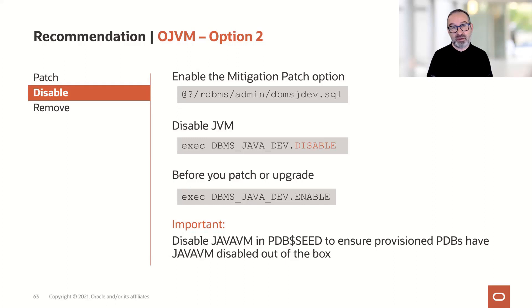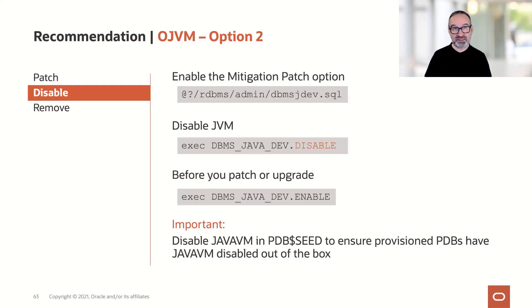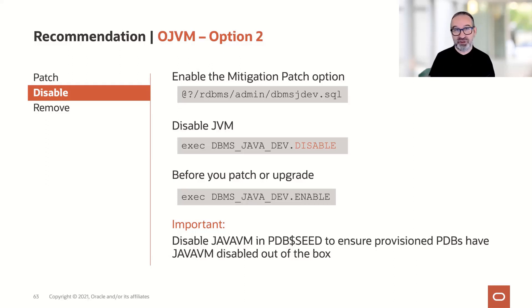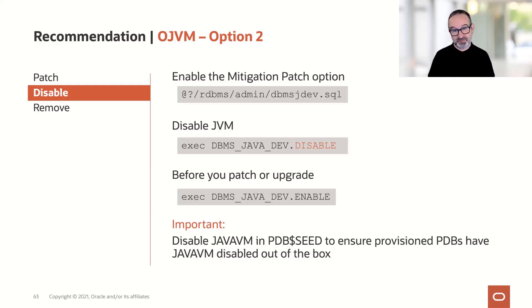It's very important to also disable the Java subsystem in PDB dollar seed, to ensure that when you provision fresh PDBs they also have the Java subsystem disabled out of the box. Otherwise, you could have five PDBs with the mitigation patch active and Java subsystem disabled, but a newly provisioned PDB would have the Java subsystem enabled. Make these adjustments to PDB dollar seed, and newly provisioned PDBs will have the Java subsystem disabled by default. You can enable it later if needed, but be aware you must enable it before patching.